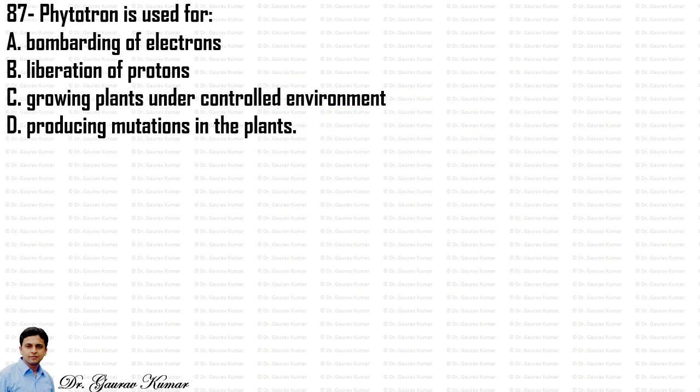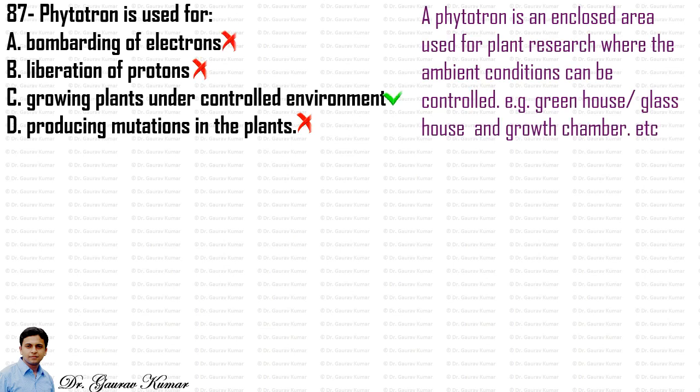Phytotron is used for what? A phytotron is a device or enclosed area used for plant research where ambient conditions can be controlled — for example, greenhouse, glass house and growth chambers.